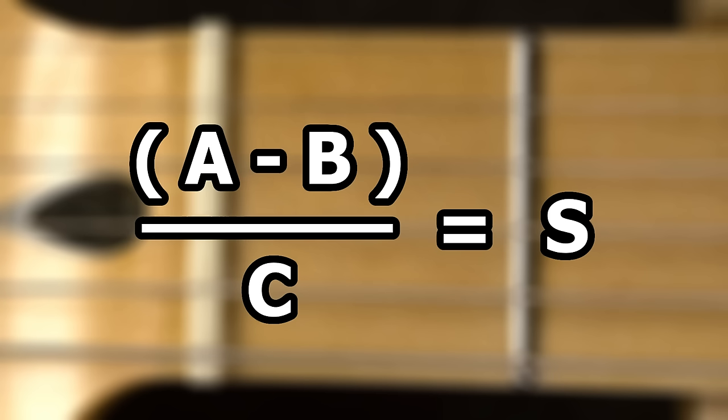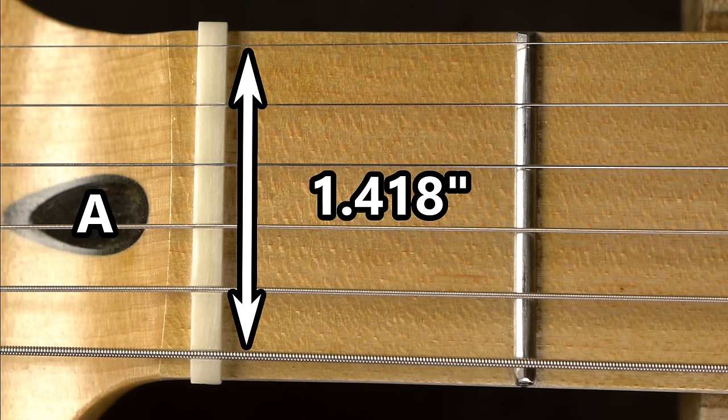To space the inner strings, we'll use a formula. A minus B divided by C equals S. To find A, use digital calipers to measure the distance between the inside of the two outermost strings. In this example, A equals 1.418 inches.